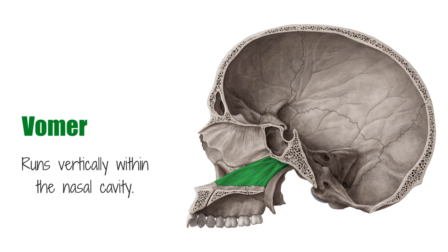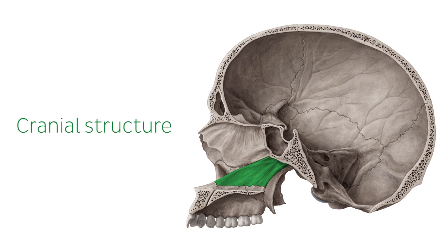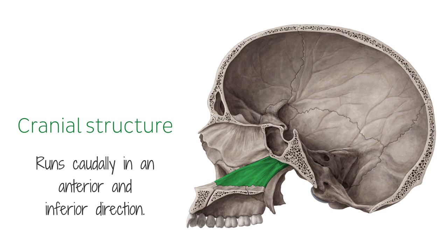When the skull is completely assembled, it can only be seen through the nasal orifice anteriorly. This cranial structure runs caudally in an anterior and inferior direction, so that from a lateral point of view, it looks like a diagonal rectangle, more commonly known as a plow.